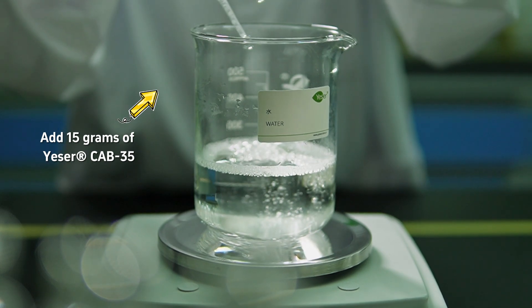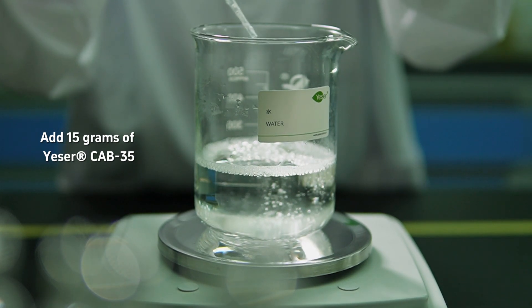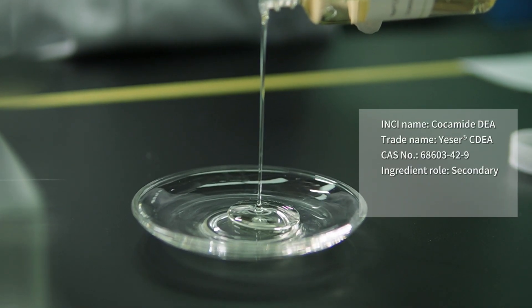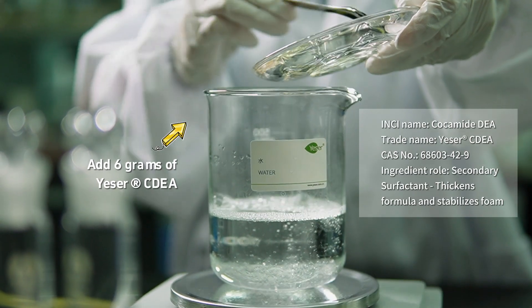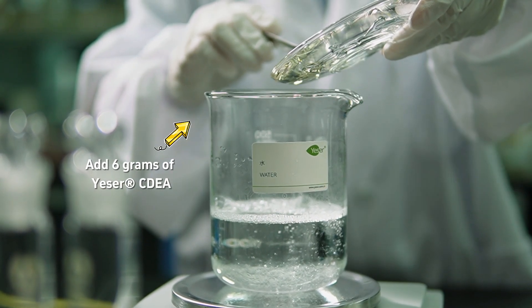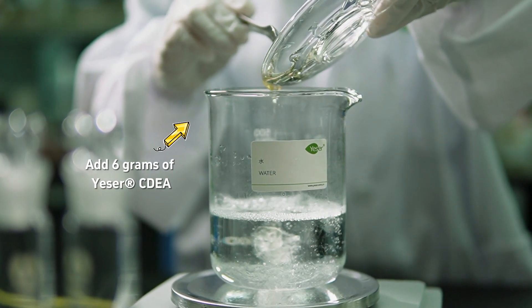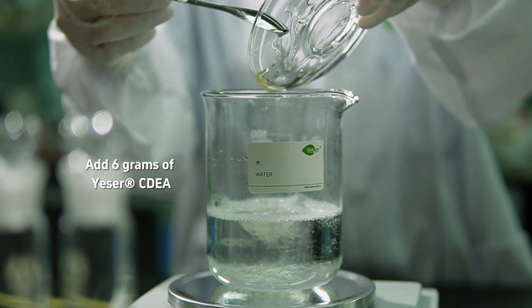For this batch, we're adding 15 grams, which is about 5% of the total. Next, we add our CDEA. This ingredient's claim to fame is enhancing viscosity and stabilizing foam. In our formula, we're adding 6 grams of it, making up 2% of the final 300-gram batch.